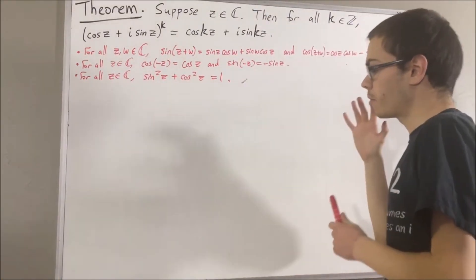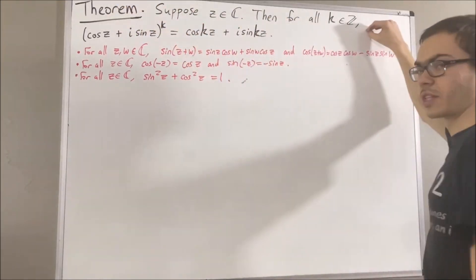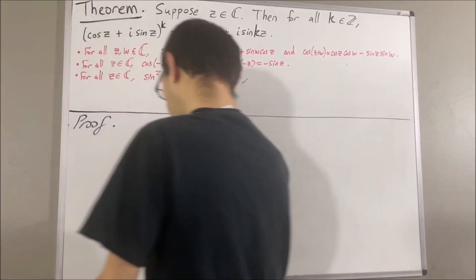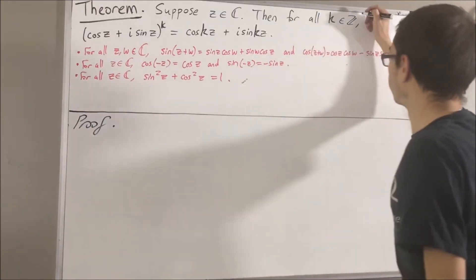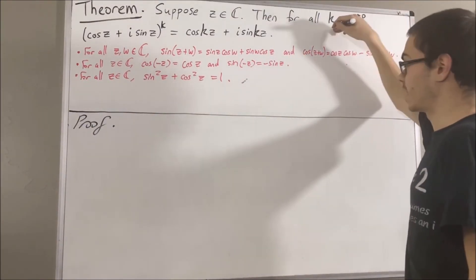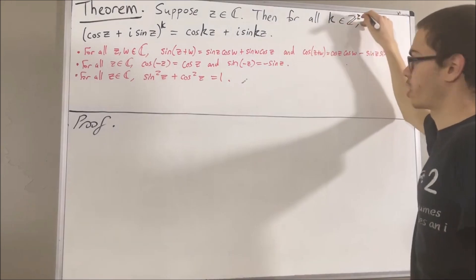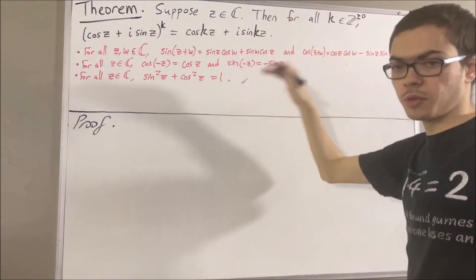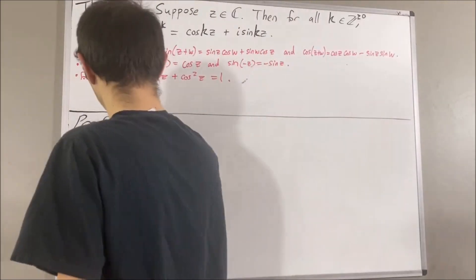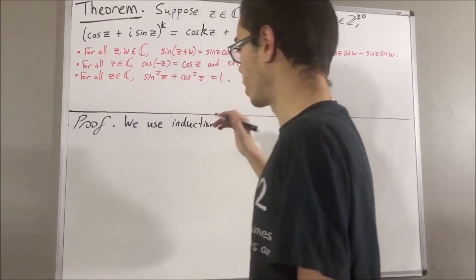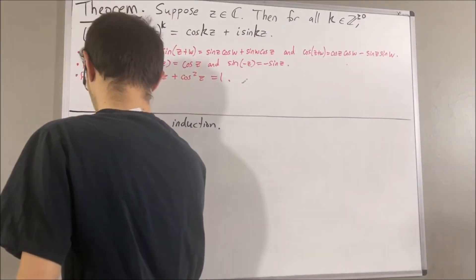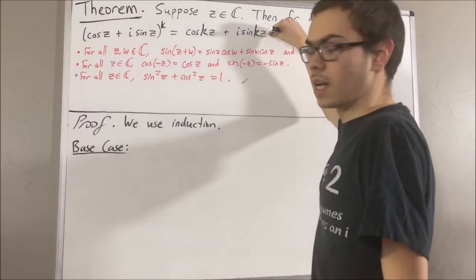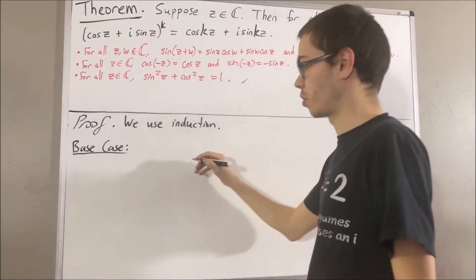Okay, so now let's get into proving this theorem. To start the proof, we're actually first going to prove the theorem in the case that k is an integer greater than or equal to 0. So, to prove this, we're going to use induction. And so, let's start with the base case. In the base case, we're trying to show that this is true in the case where k is equal to 0.